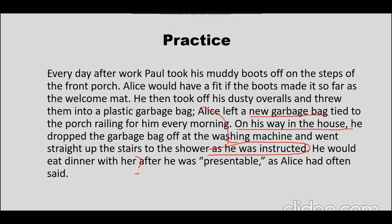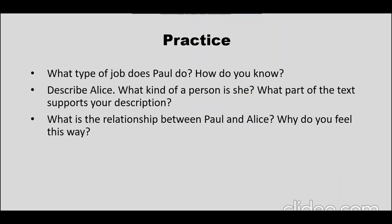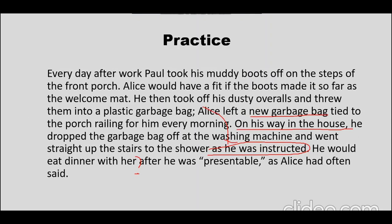Question three: What is the relationship between Paul and Elias, and why do you feel this way? We can say this could be a husband and wife, or a mother and son, because the text does not explicitly clarify the relationship. However, since the text says Paul does things 'as he was instructed,' it suggests either a wife or a mother could be giving those instructions. So this was all about academic reading — thank you so much.